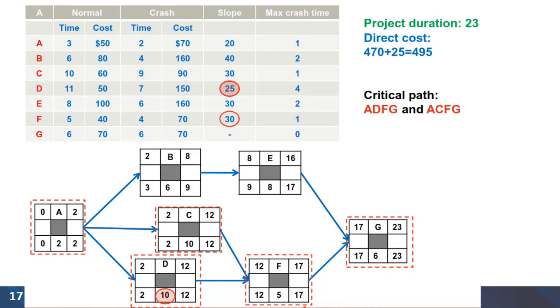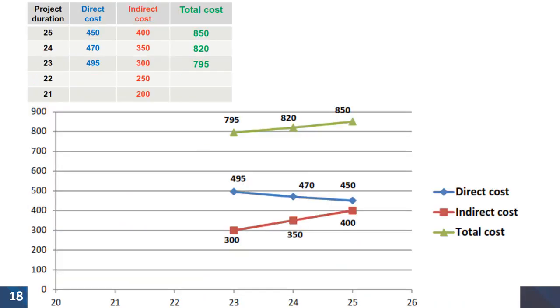So that cost is added to the previous cost of 470 and the duration is reduced to 23 days. We need to redraw the project network to find a critical path. In this case we have two of them. The situation for the project can be plotted. Now the total cost is decreased to 795. We are on a downward trend. So it's making good sense to continue crashing.